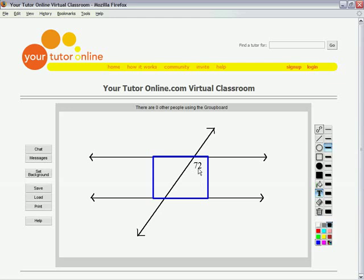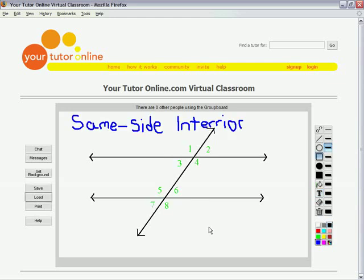For example, if we know this angle is 72 degrees, then we know its alternate interior angle is also 72 degrees. We cross the line and go to the other side, so this angle is 72 degrees.